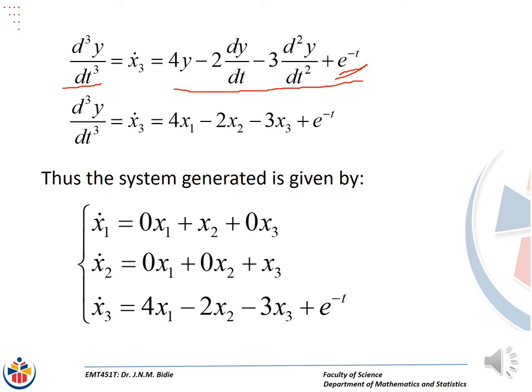Thus we have generated a system of the form. Remember we had said x1_dot is equal to x2. In order to understand this perfectly, I suggest that all the other variables not represented should have their coefficients written as 0. So: x1_dot equals 0·x1 plus x2 plus 0·x3. Then x2_dot equals x3, making the coefficient of x1 be 0 and the coefficient of x2 be 0. And x3_dot equals 4x1 minus 2x2 minus 3x3 plus e to the power negative t.